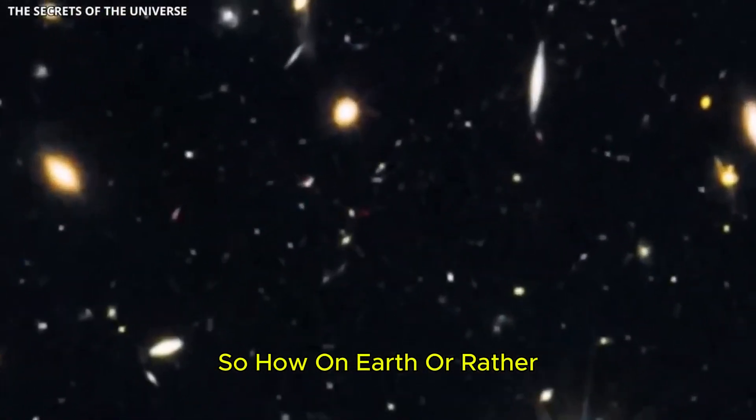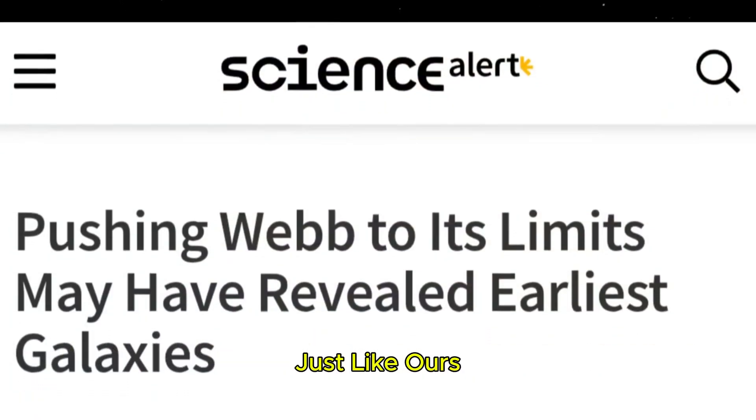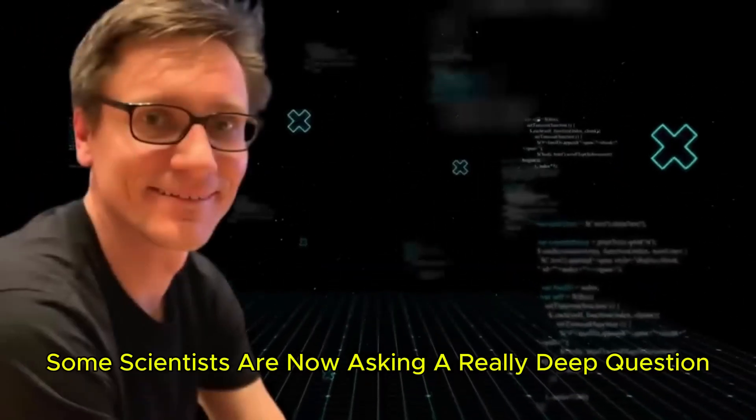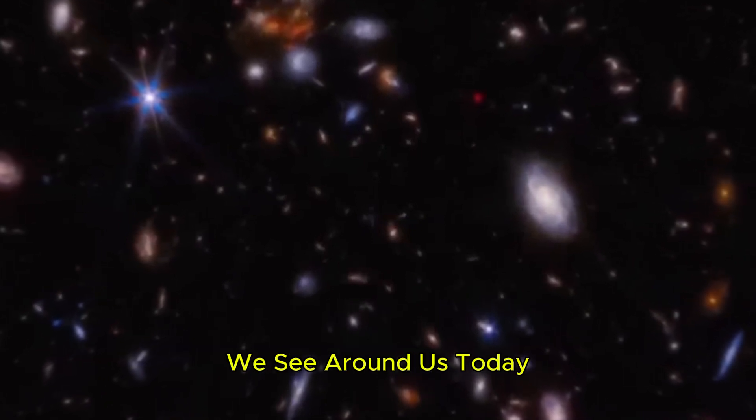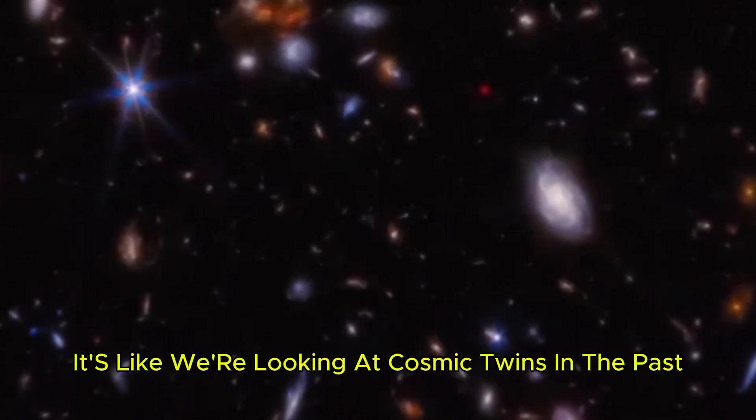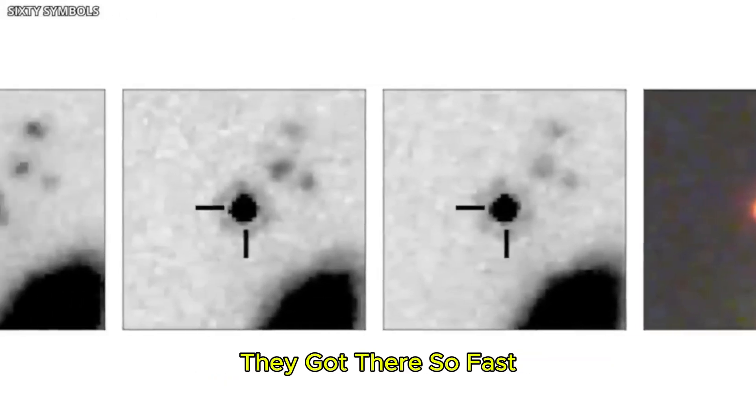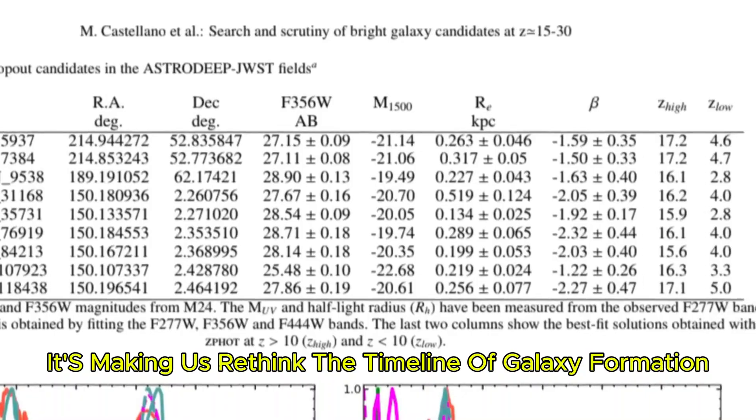So, how on Earth, or rather, how in the universe are we seeing galaxies that look just like ours forming only one billion years after the Big Bang? It doesn't add up. Some scientists are now asking a really deep question. Why does the early universe seem to mirror the universe we see around us today? It's like we're looking at cosmic twins in the past, and no one really knows how or why they got there so fast. It's making us rethink the timeline of galaxy formation entirely.